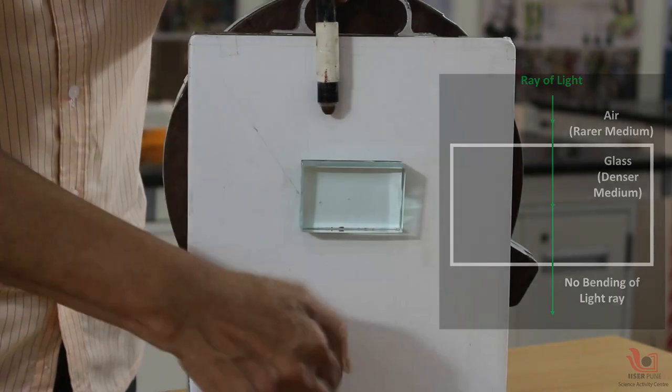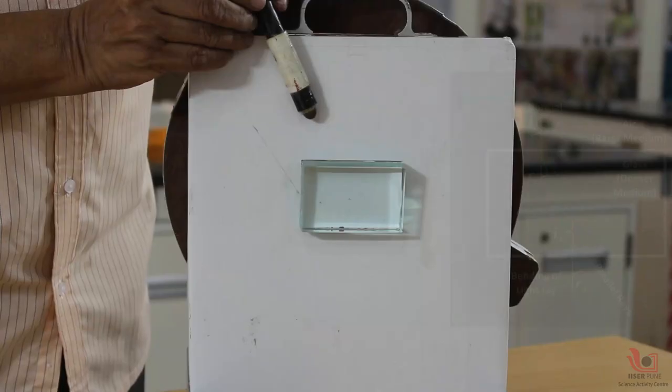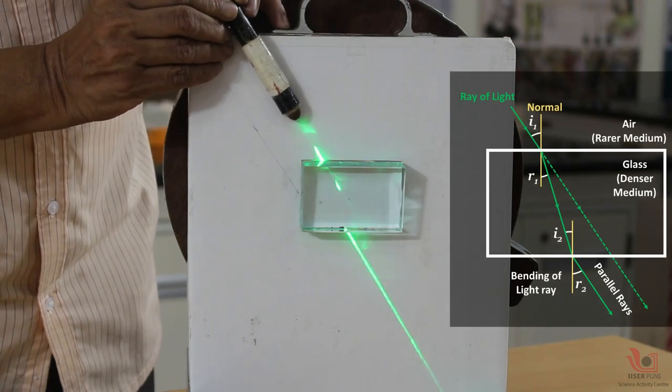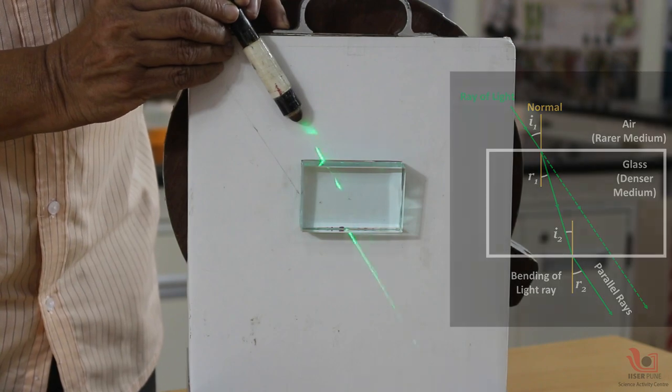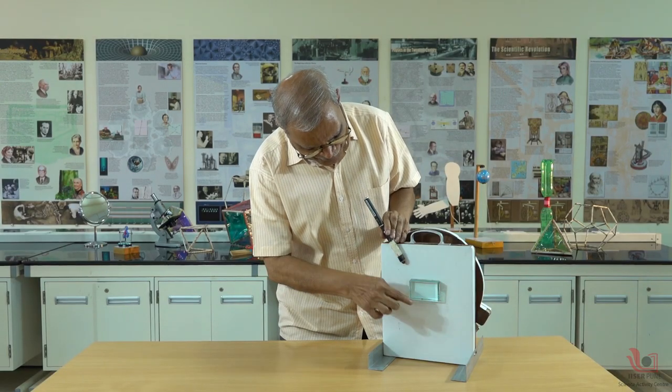We can see that it goes in a straight line, but if I change the angle and make this angle more and more, I can observe that the ray of light which comes here is going like this.